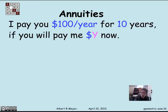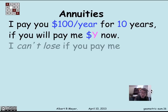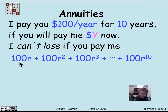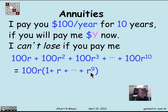$100 in one year is worth 100 times R. $100 in two years is worth 100 times R squared. And $100 in 10 years is worth 100 times R to the 10th. This sum represents the total amount I need today in order to pay you $100 a year for 10 years — each term is the present value of the $100 payment that many years out. Factoring out 100R, I'm left with 100R times the geometric sum from 1 to R to the ninth, where the ratio is R.